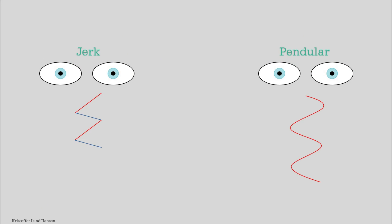For the next type, we have pendular nystagmus. In pendular nystagmus, there is no quick phase. Instead, the eye swings back and forward just like a pendulum.